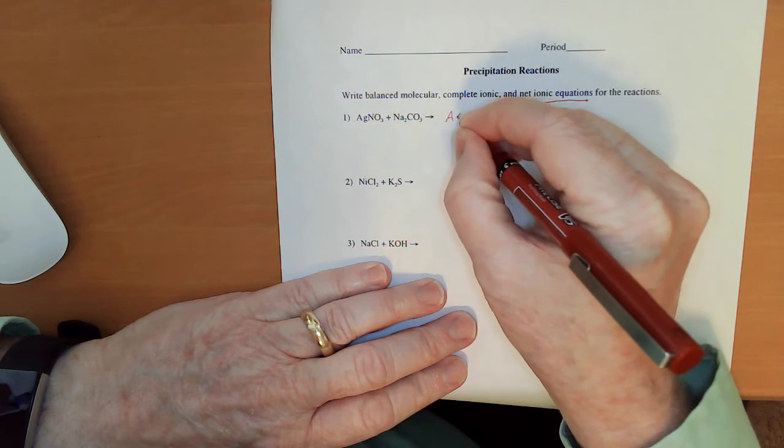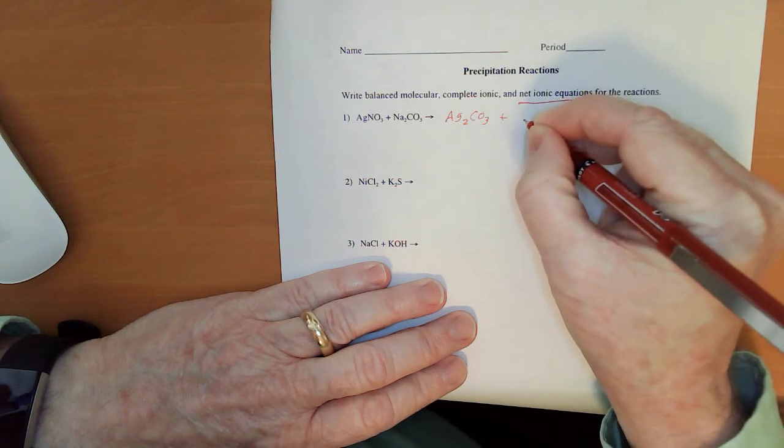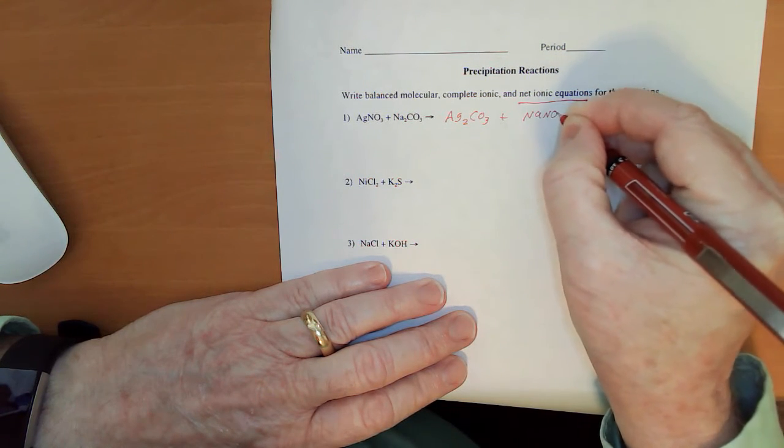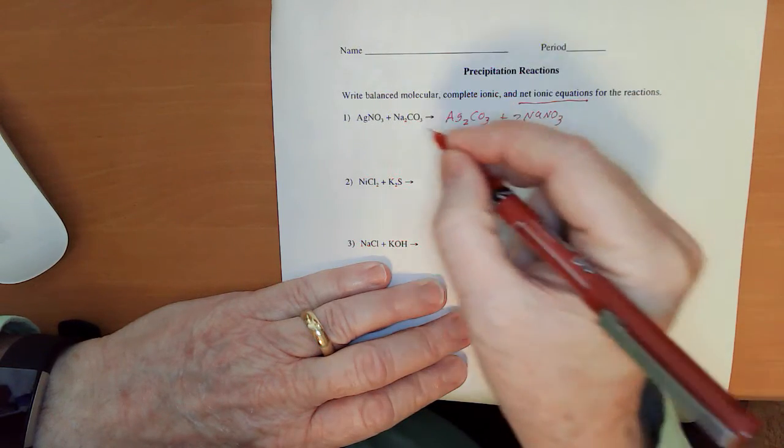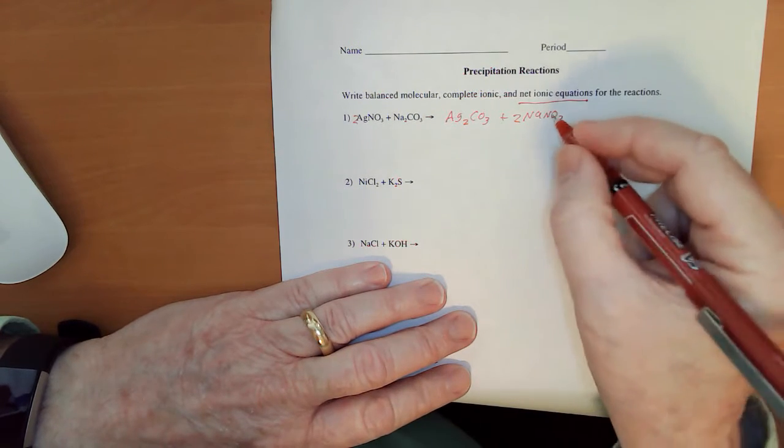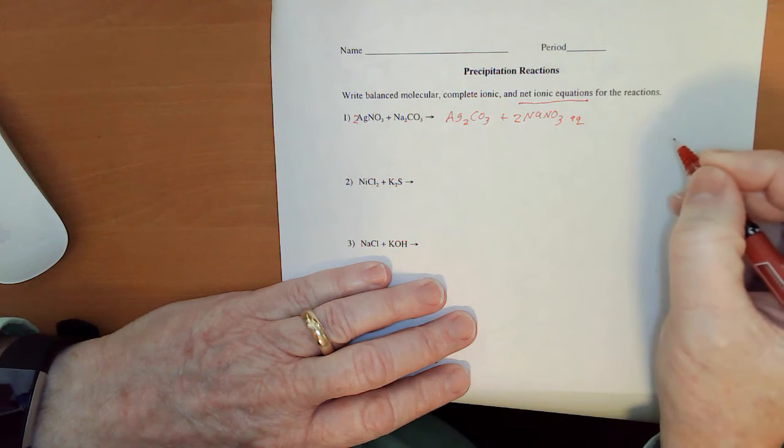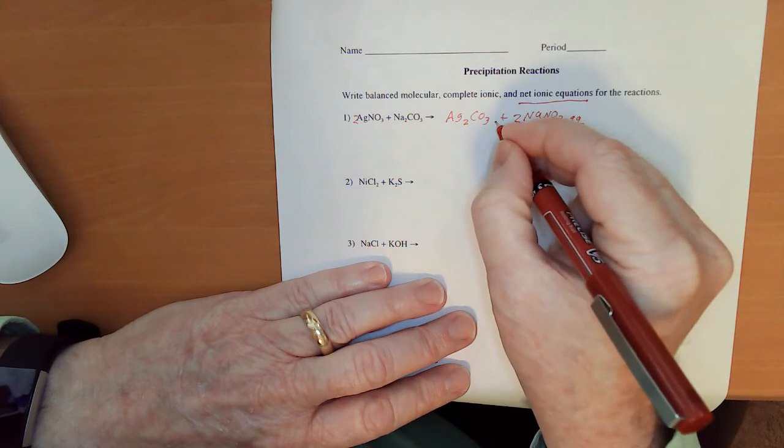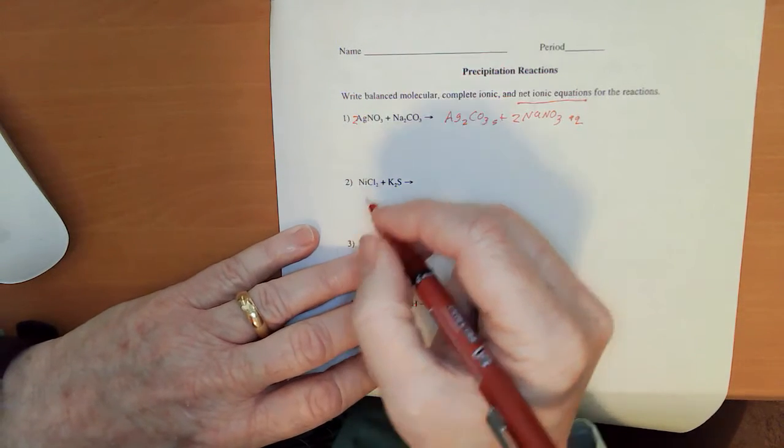That's all that we'll really be grading you on for our tests in the future. So in this first one, if we do our molecular, we do a partner exchange and we get Ag2CO3 and NaNO3. To balance it, we're going to need to put a 2 there and we're going to need to put a 2 there. Now according to our solubility rules, nitrates are always soluble, so that's going to be aqueous. Silver precipitates with just about everything, so that's going to be our solid.